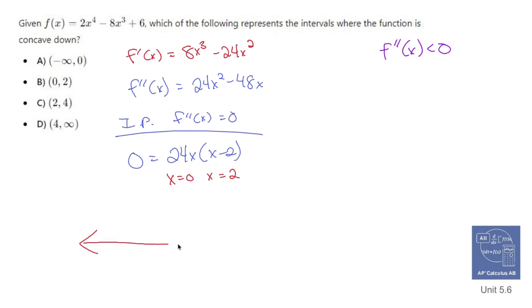So I'm going to make a sign graph for f double prime. 0 is a magic number, 2 is a magic number. And so what I'm going to want to do is plug in numbers in those intervals so I can find out where things are positive and where things are negative in f double prime. So if I plug in negative 1, that'll be fine. And if I plug in regular 1, that'll be fine. And if I plug in 3, that'll be fine.